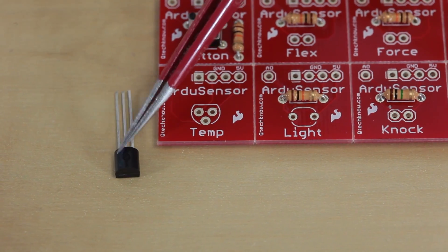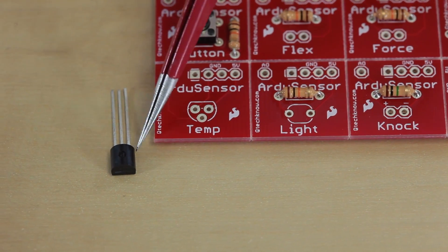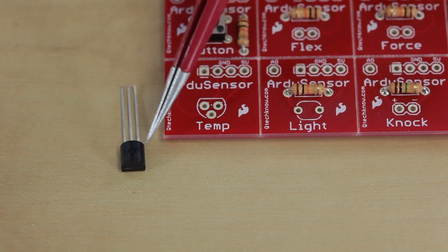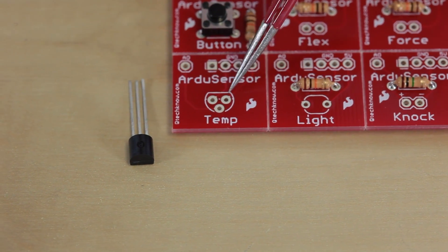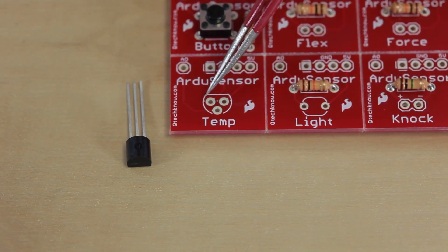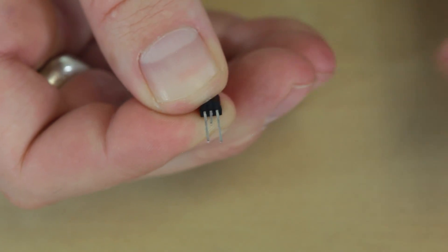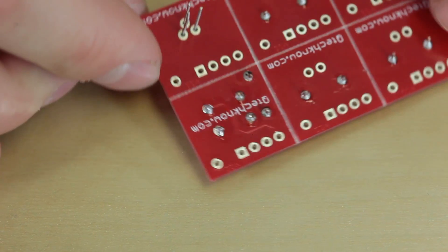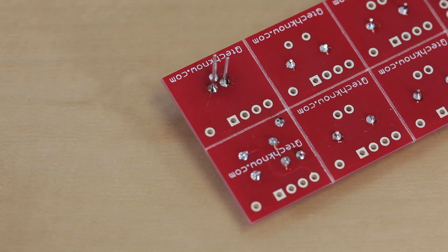Next we're going to install the temperature sensor, and it goes right here where it says temp. You'll notice there's a little bit of curve to the temperature sensor, and on the back side it has a flat spot. The flat spot will go here and the curve will go there. You'll have to bend this middle lead back a little bit so it fits into place. Just be careful not to get any solder bridges or solder jumpers in between these.